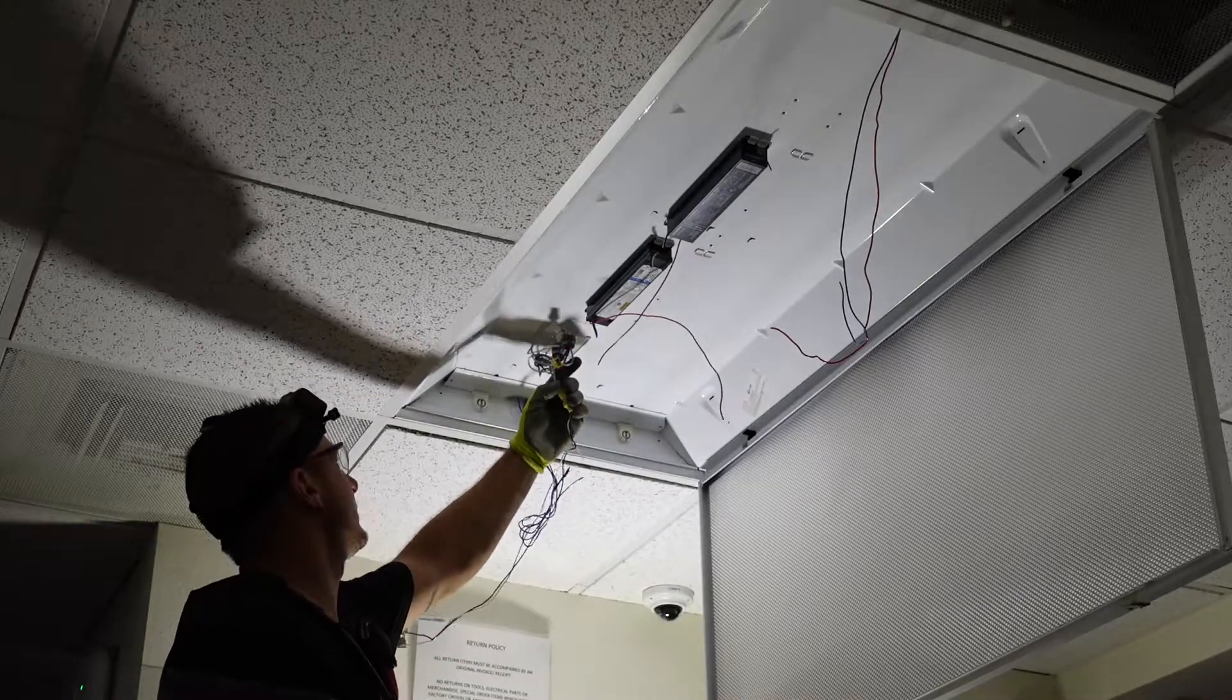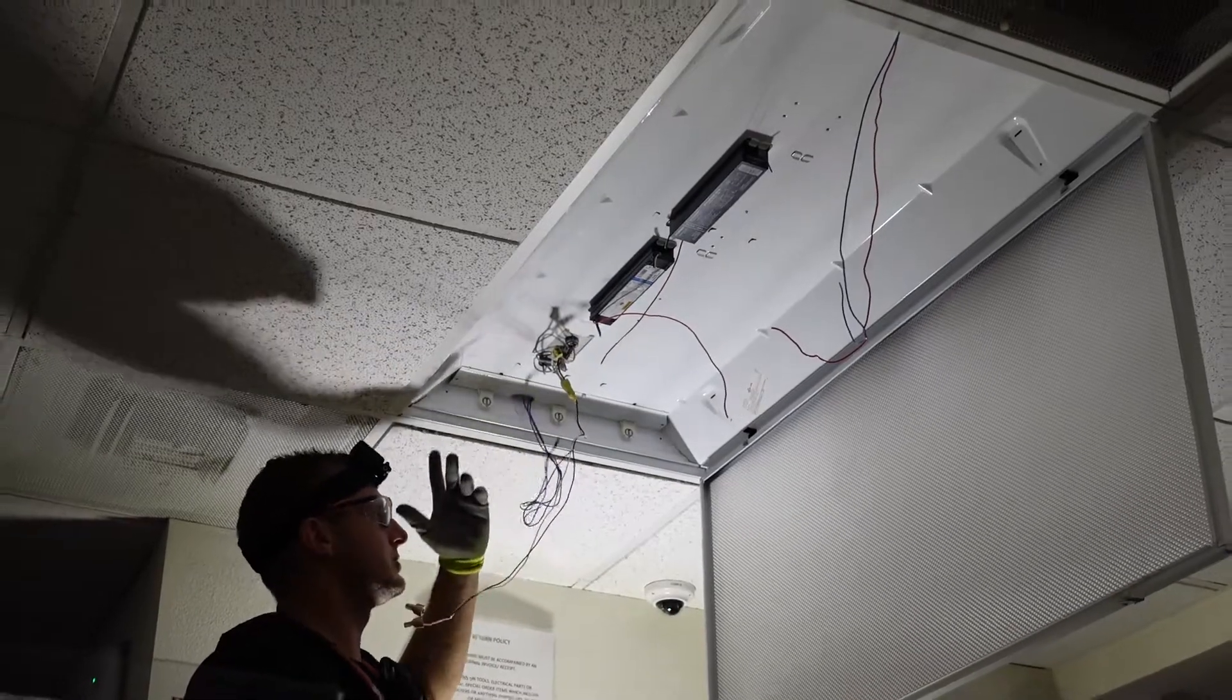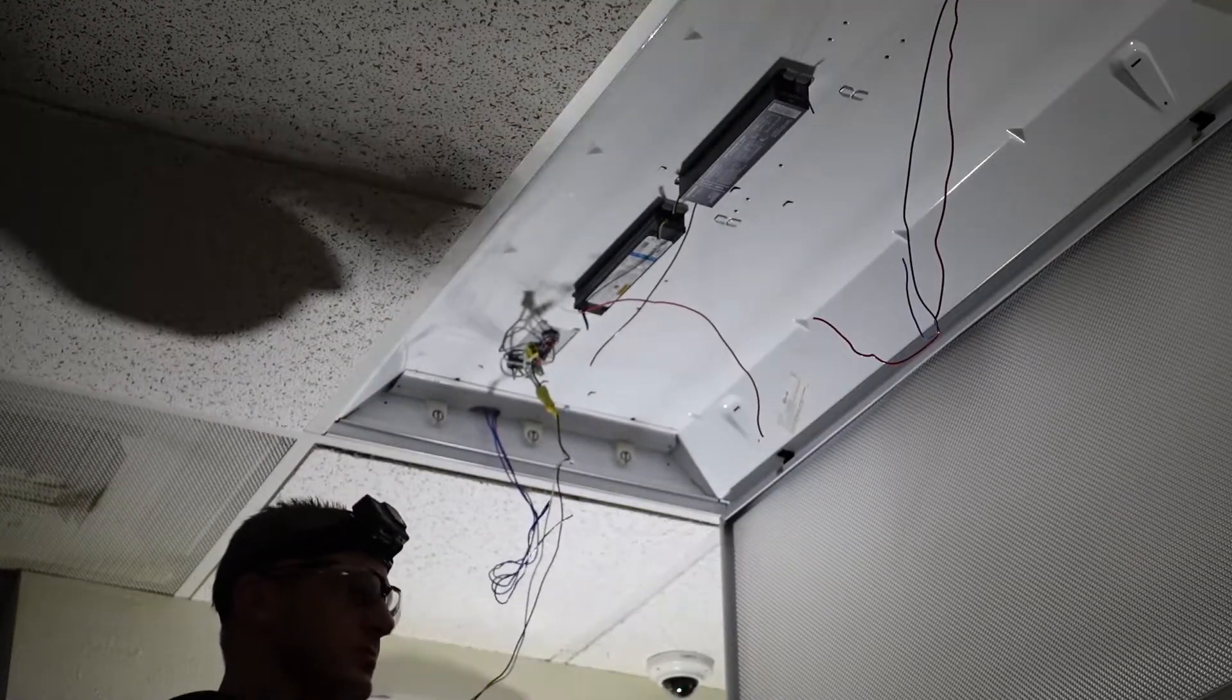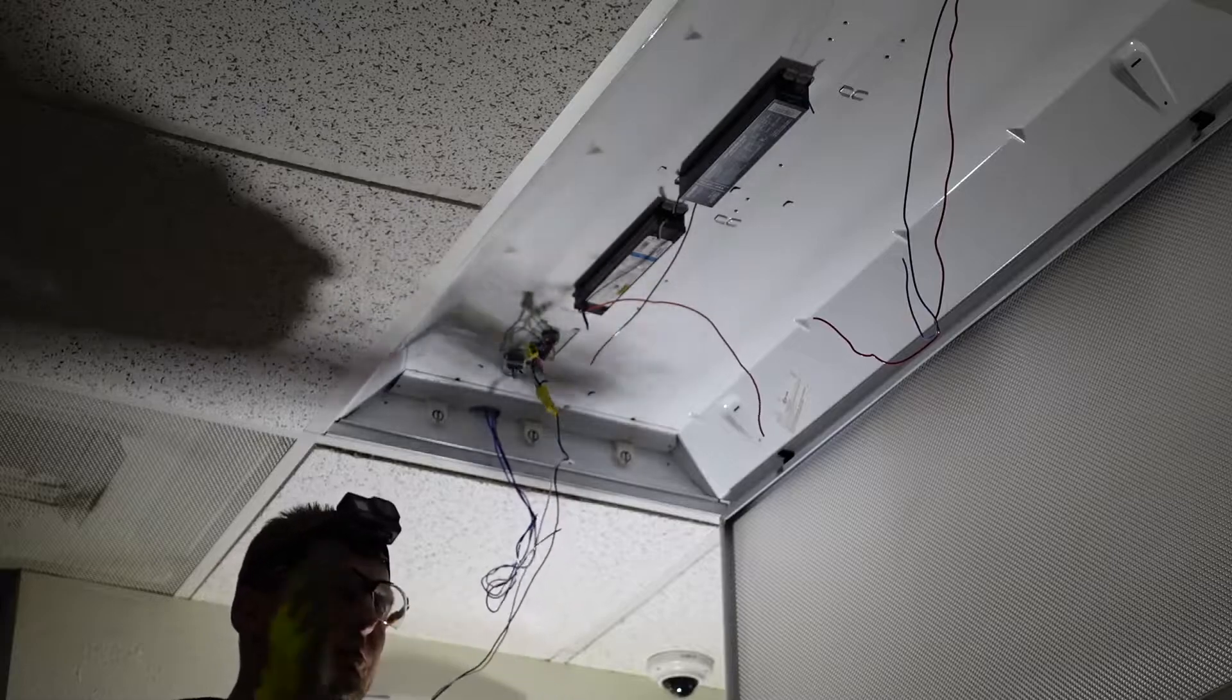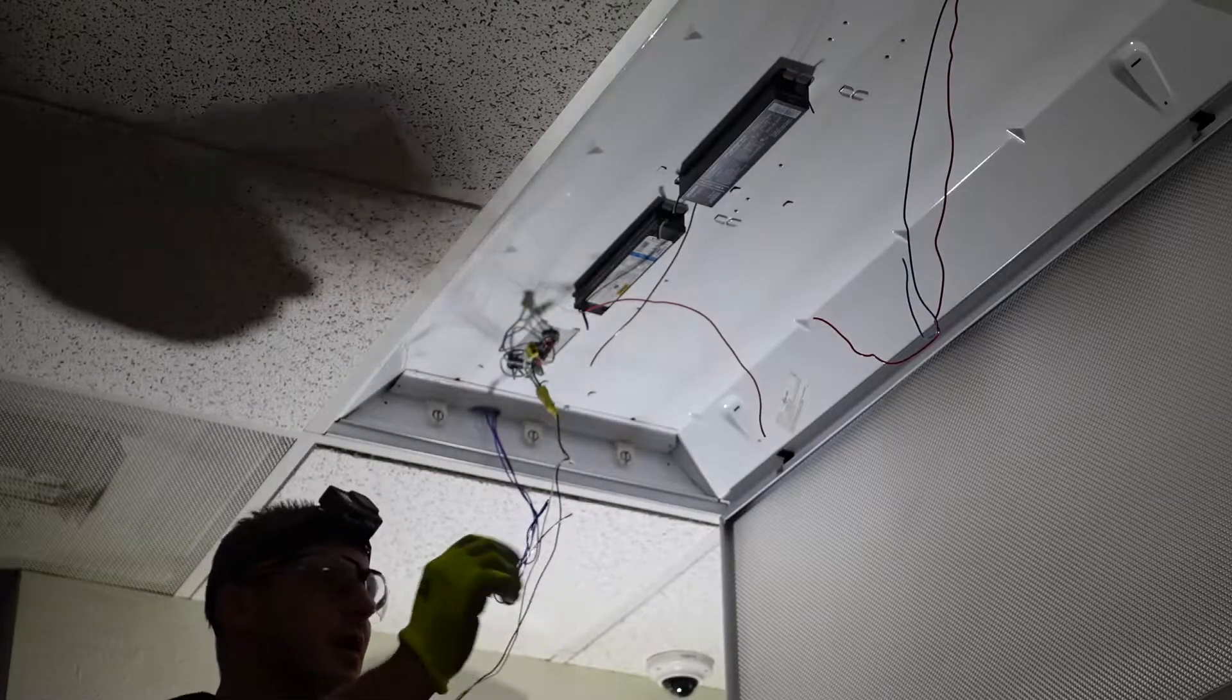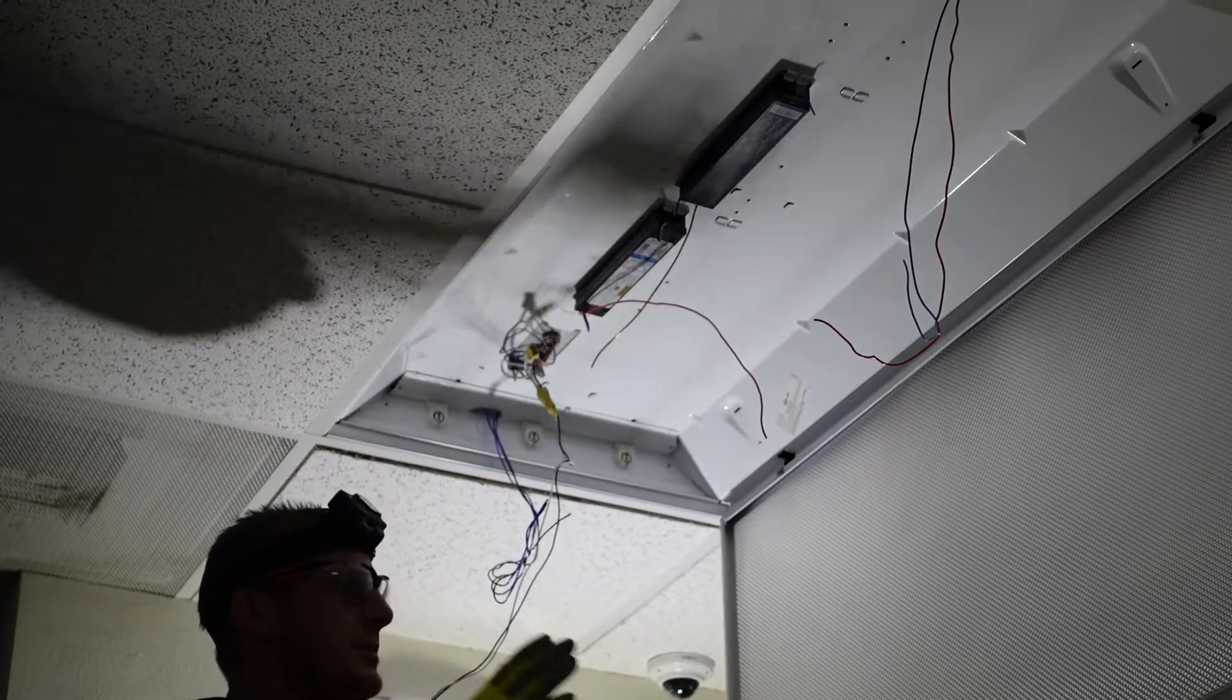So if you see right here you have black and a red. What you have is A and B switching. So it's meant to turn on in zones. You can turn on one switch and get light throughout the whole building, but not a lot of light. You turn on the other switch and it will light up the entire floor.